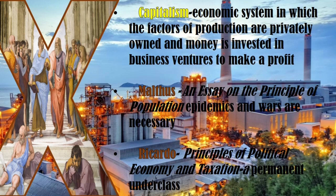Another known philosopher was Thomas Malthus, who wrote An Essay on the Principle of Population. According to him, epidemics and wars are necessary. His Malthus theory states that population growth is potentially exponential while growth of food and other resources is linear. We also have David Ricardo, known for his Principles of Political Economy and Taxation, who argued for a permanent underclass and that land rent grows as population increases.